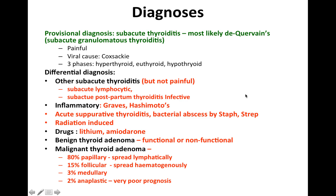My provisional diagnosis for this lady is subacute thyroiditis, most likely de Quervain's, otherwise known as subacute granulomatous thyroiditis. This is painful and often caused by the virus Coxsackie. It has three phases: firstly hyperthyroid, then euthyroid, and finally hypothyroid.